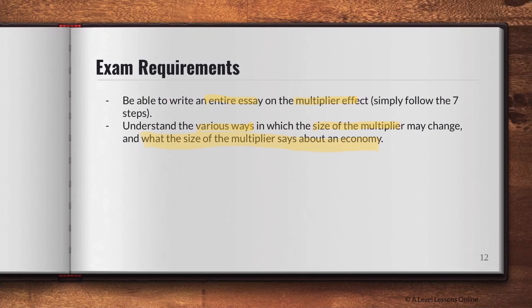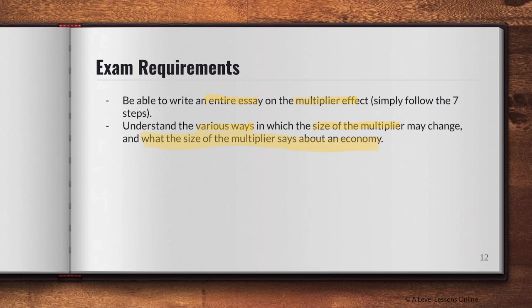That's all for this video. The multiplier effect is actually quite simple — just follow the seven steps. When writing future essays, you don't always need all seven steps; just get the gist: state what the multiplier is, why it is what it is, what it means for the economy, whether the income rise is real or nominal, whether the economy is below or at full employment, and what the multiplier number implies. If you enjoyed the video, give it a like and subscribe — see you in the next one!